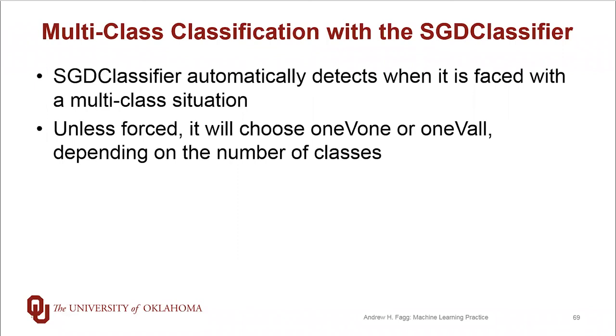Unless you force it to choose one of the approaches, it will dynamically make a choice between the one versus one and the one versus all approach. And the fundamental deciding point here is how many classes are there? If we have a small number of classes, it prefers to take the one versus one approach. And as the number of classes gets larger and N squared classifiers starts to get too big, then it switches over to the one versus all approach.